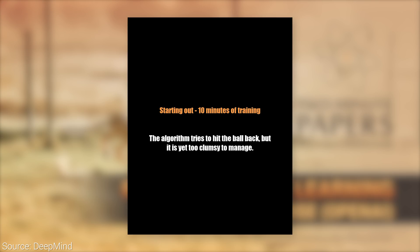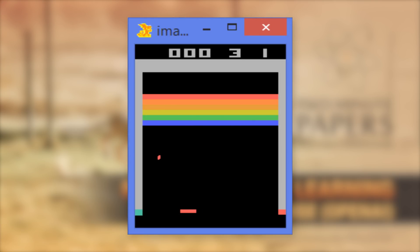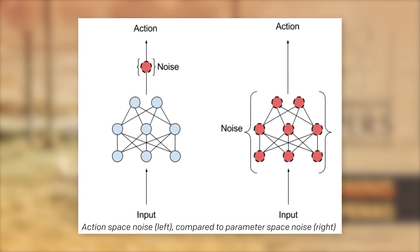When starting out, the learner starts exploring the parameter space and performs crazy, seemingly nonsensical actions until it finds a few scenarios where it is able to do well. This can be thought of as adding noise to the actions of the agent. Scientists at OpenAI propose an approach where they add noise not directly to the actions, but the parameters of the agent, which results in perturbations that depend on the information that the agent senses.